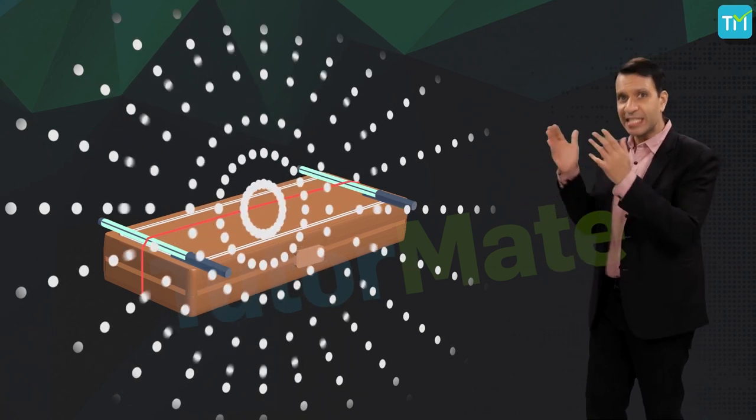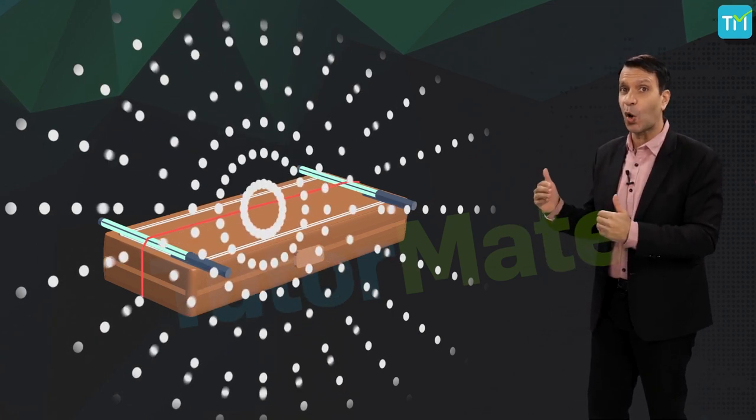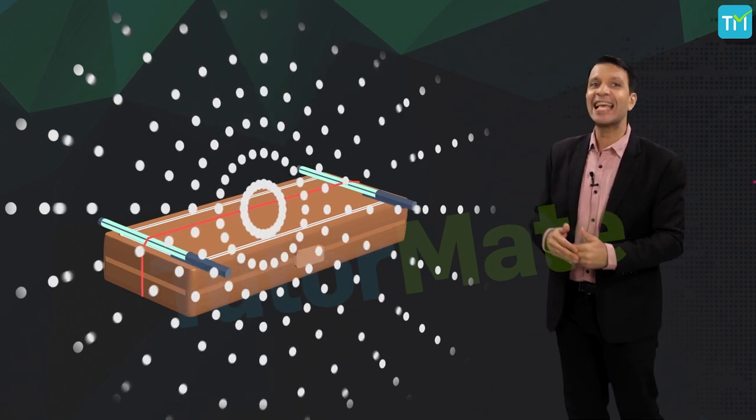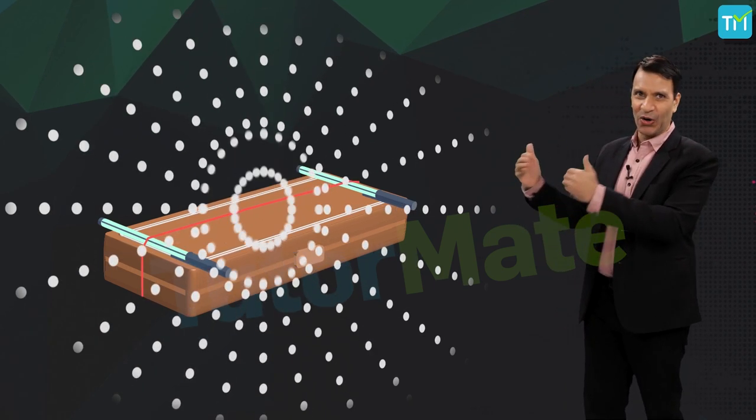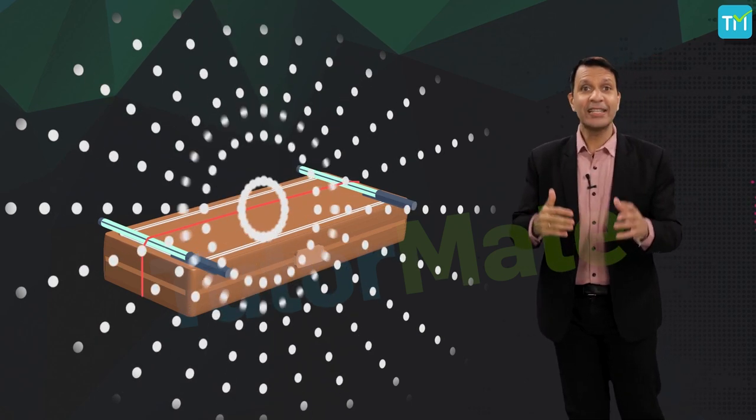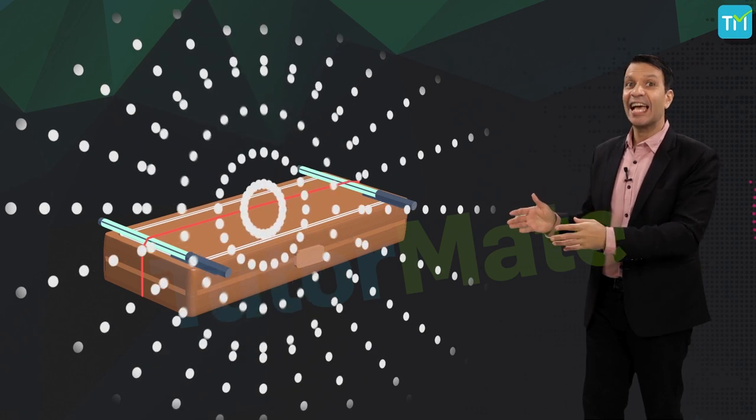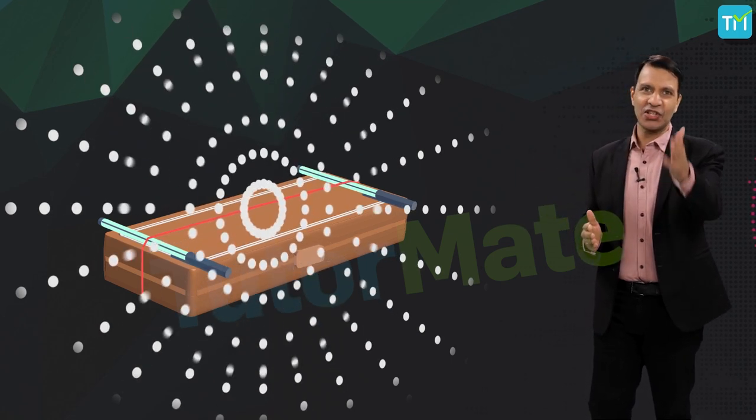Then, it is the job of the second particle to exert a force on the third particle and cause it to vibrate, and this goes on. So, the vibration travels from one particle to another and finally reaches the listener.